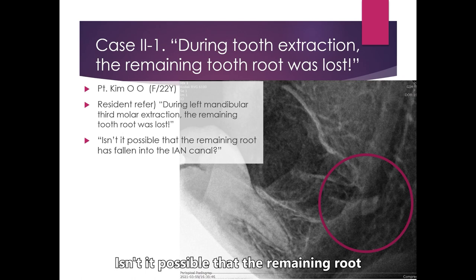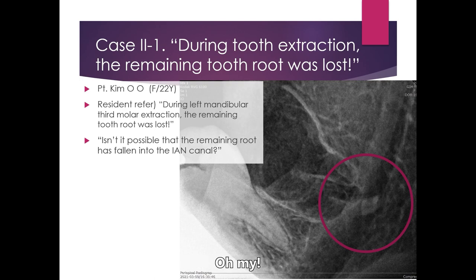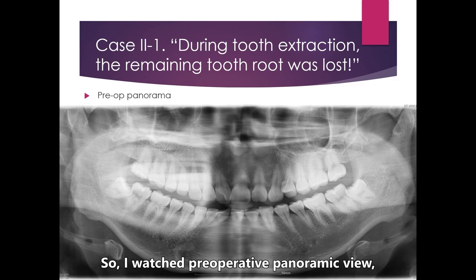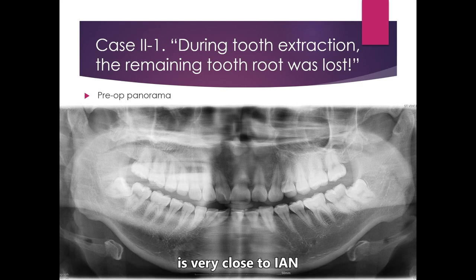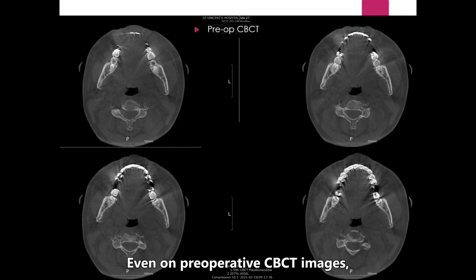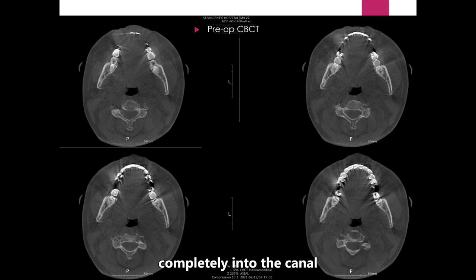The resident asked if the remaining root had fallen into the IAN canal. The periapical view looks terrifying. I reviewed the preoperative panoramic view: the left mandibular third molar is very close to the IAN, but it looks a bit far away. Even on preoperative CBCT images, the root doesn't seem to penetrate completely into the IAN canal.